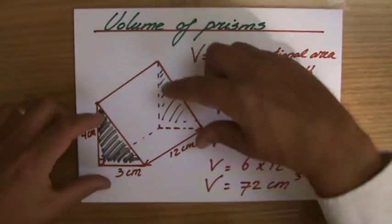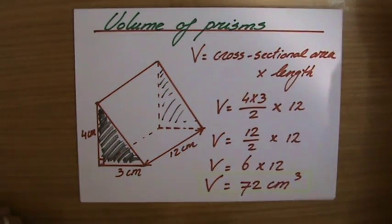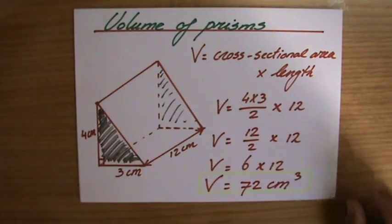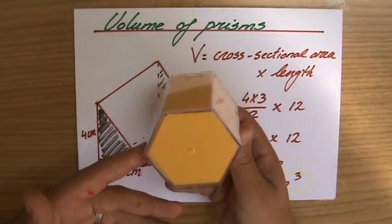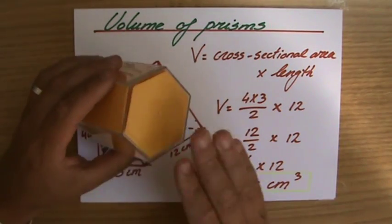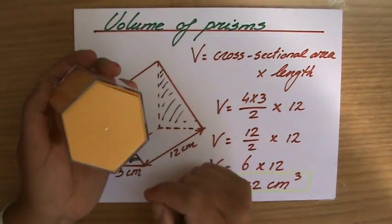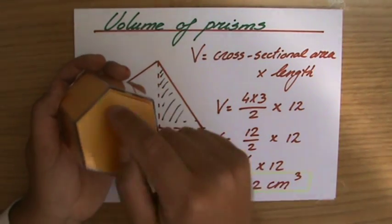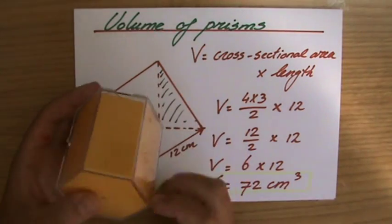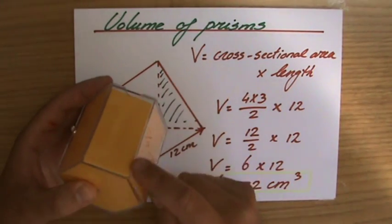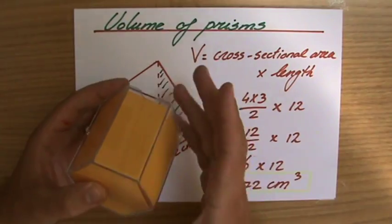And that length is a distance between those two similar ends. So if I would just grab this prism, what is the volume of it? Well, I identify my two similar ends. So those are those two, the hexagons. So I would take the area of one of those hexagons and I would multiply it by this length to get the volume.